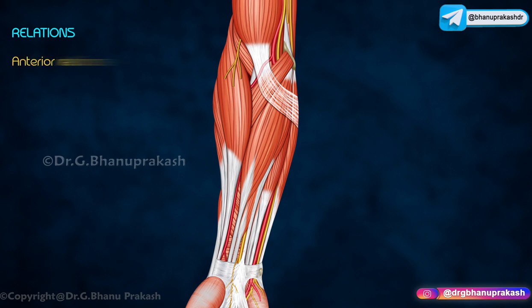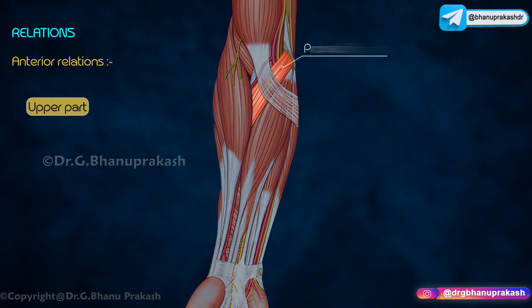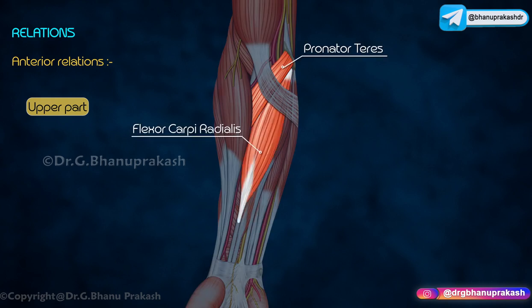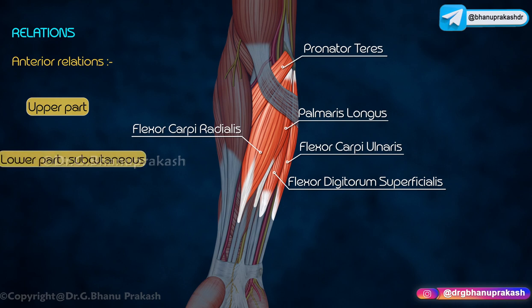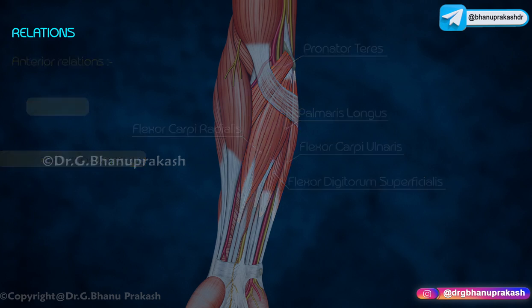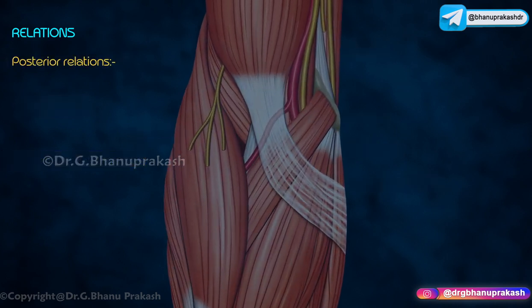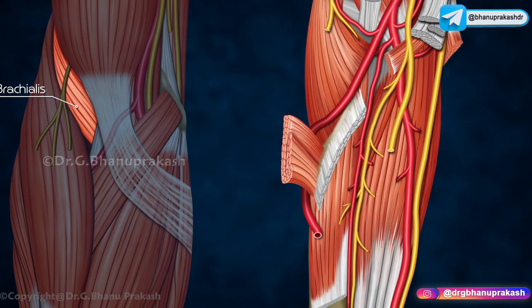Anterior relations: the upper part is covered by the following muscles — pronator teres, flexor carpi radialis, palmaris longus, flexor digitorum superficialis, and flexor carpi ulnaris. The lower part is subcutaneous and is only covered by fascia.